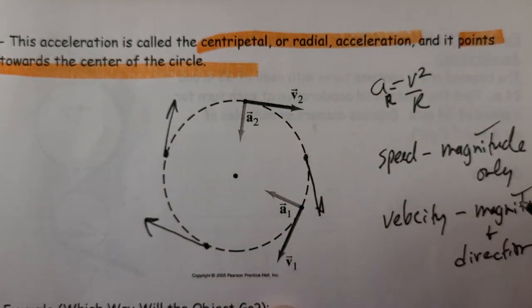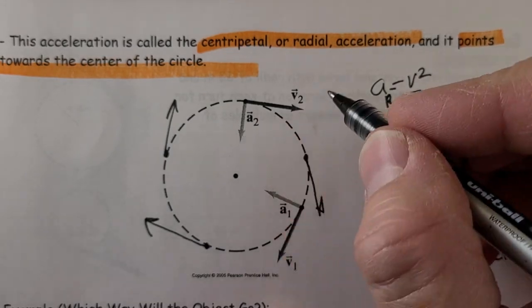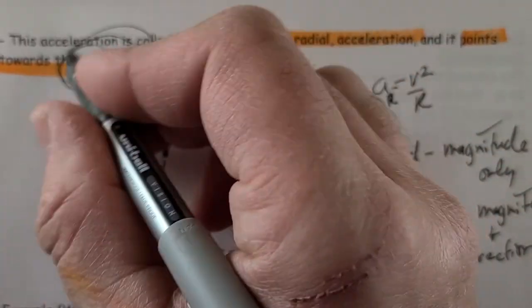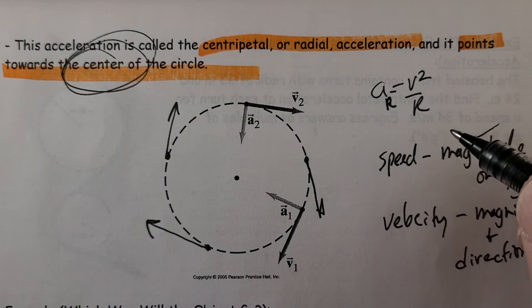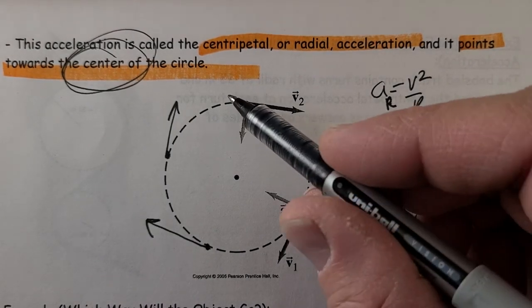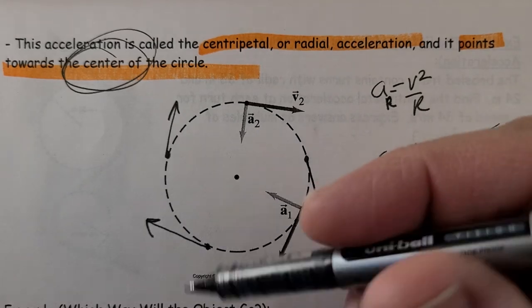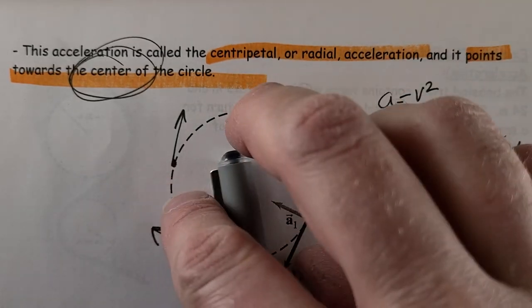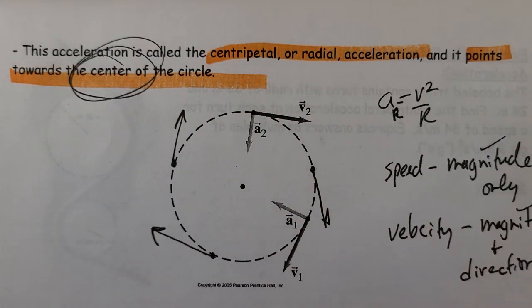That's not changing the quickness, not changing the magnitude, but it's changing direction. So it works towards the center of the circle. One thing you need to remember is that the acceleration is towards the center, which causes the velocity to be continuously changing. And what's changing? The direction of it.